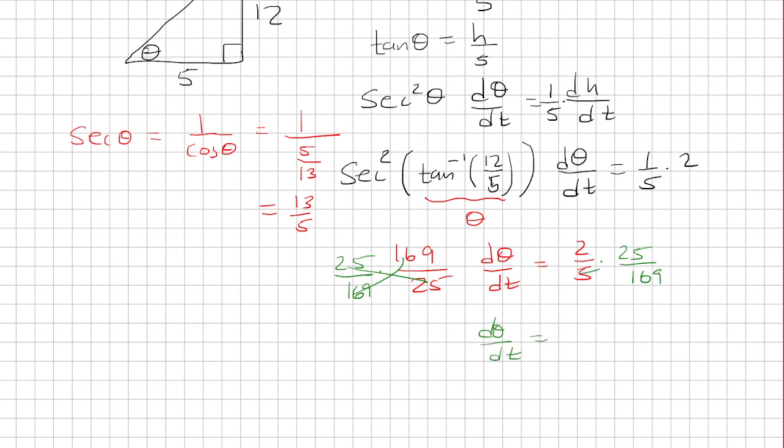Now, 5 and 25 just be 1 and 5. So that's 10 over 169. And we want to round this to two decimal places. So this will be 0.06. And that is our answer.